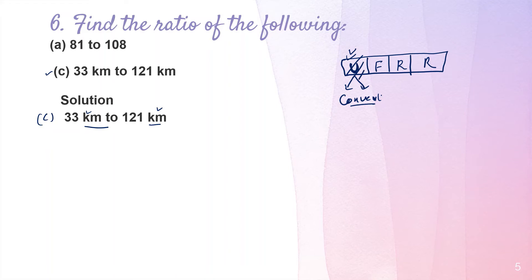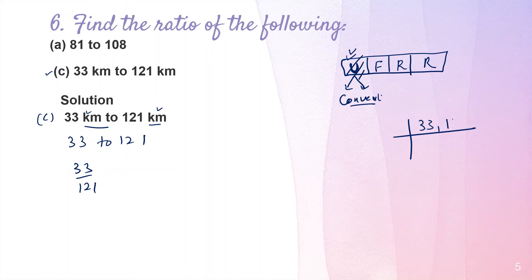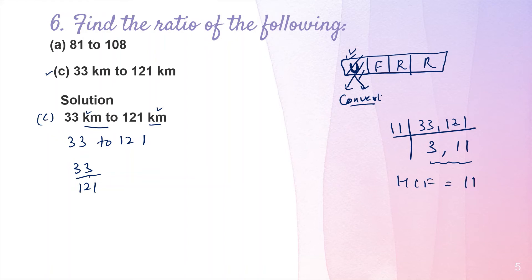Good news — the units are both kilometres, so they are the same and we skip the conversion step. When units are the same, we ignore them going forward. Writing the fraction: 33 upon 121. Checking divisibility: 121 is not divisible by 3, but both are divisible by 11 — 33 divided by 11 is 3, and 121 divided by 11 is 11. Since 3 and 11 are co-primes, the HCF is 11.